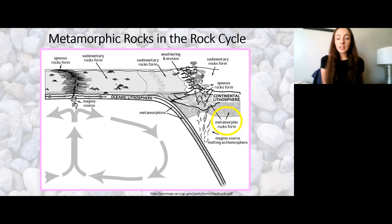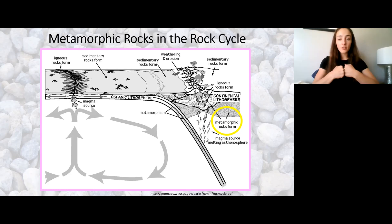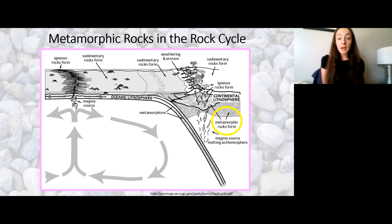Looking at this slide, we can see that metamorphic rocks are forming due to the high pressures and heat associated with plate boundaries. So at subduction zones, metamorphic rocks can form because there's really high pressure from that convergent plate boundary as well as high heat from the melting magma coming up to form that volcanic arc. And this is what is known as regional metamorphism.